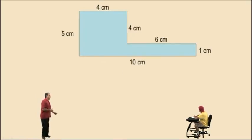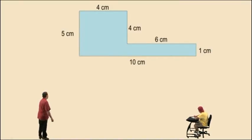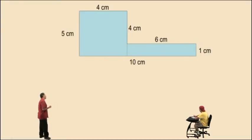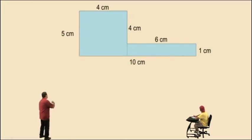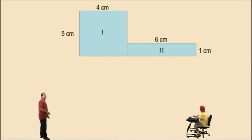Now to find the area of a complicated shape like this, we make slices and cut our shape into rectangular shapes. Remember, the area of a rectangle is length times width. So we're going to create two rectangles here. I'm going to make a slice right there, and we need to determine which side lengths we need for our rectangular shapes. Let's call this shape 1 and rectangular shape 2.